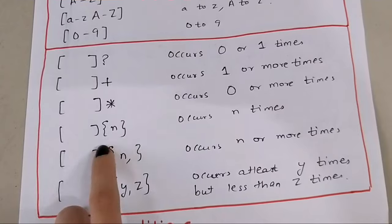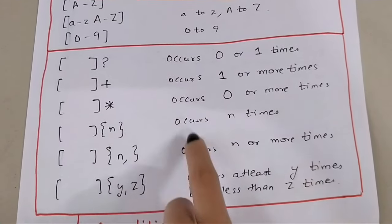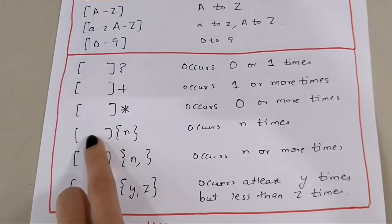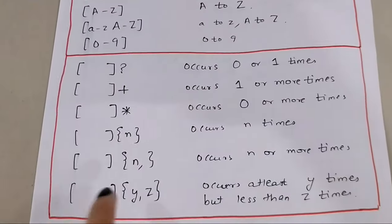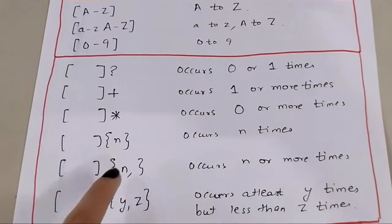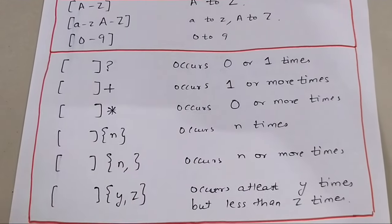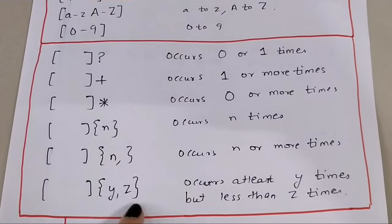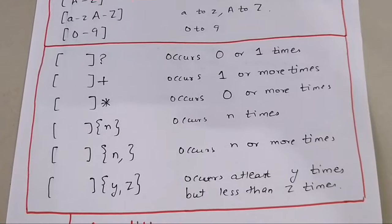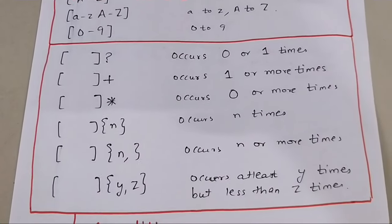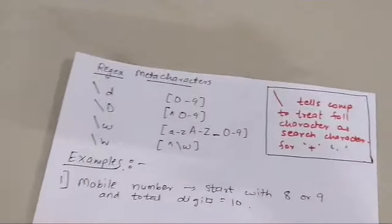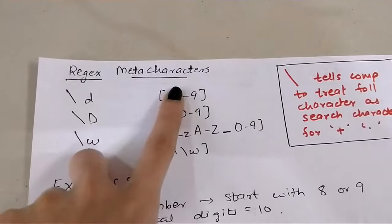When you write braces, whatever number is inside, the pattern will occur that many times. So if you write {3}, whatever is in the bracket will occur three times. Writing {n,} means occur n or more times — at least n. Writing {y,z} means it should occur at least y times but no more than z times. These are quantifiers in regex.